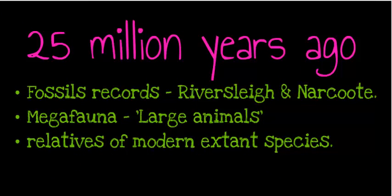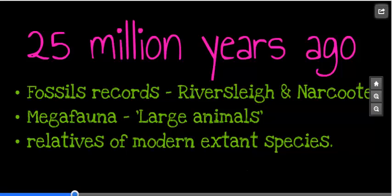Around 25 million years ago, we start to see megafauna — basically large animals — turning up in the fossil record. Significant fossil sites such as Riversleigh and Naracoorte show that megafauna were appearing around this time. They would have existed for many years and slowly become extinct. Many of them are relatives of the modern extinct species of marsupials.